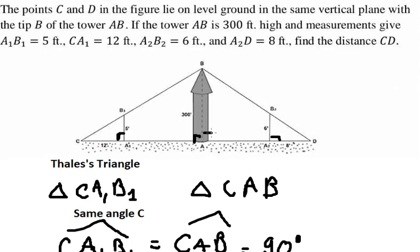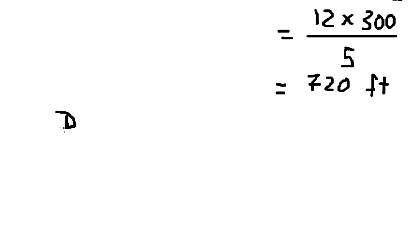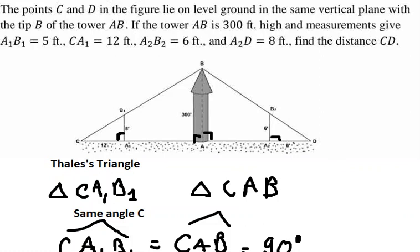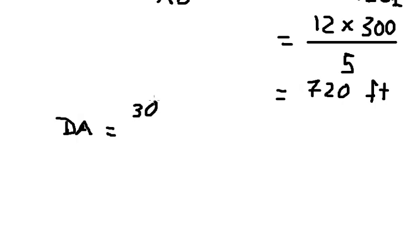So we want to find DA. In this case, we have 300 times 8 divided by 6, which gives us 400 feet.